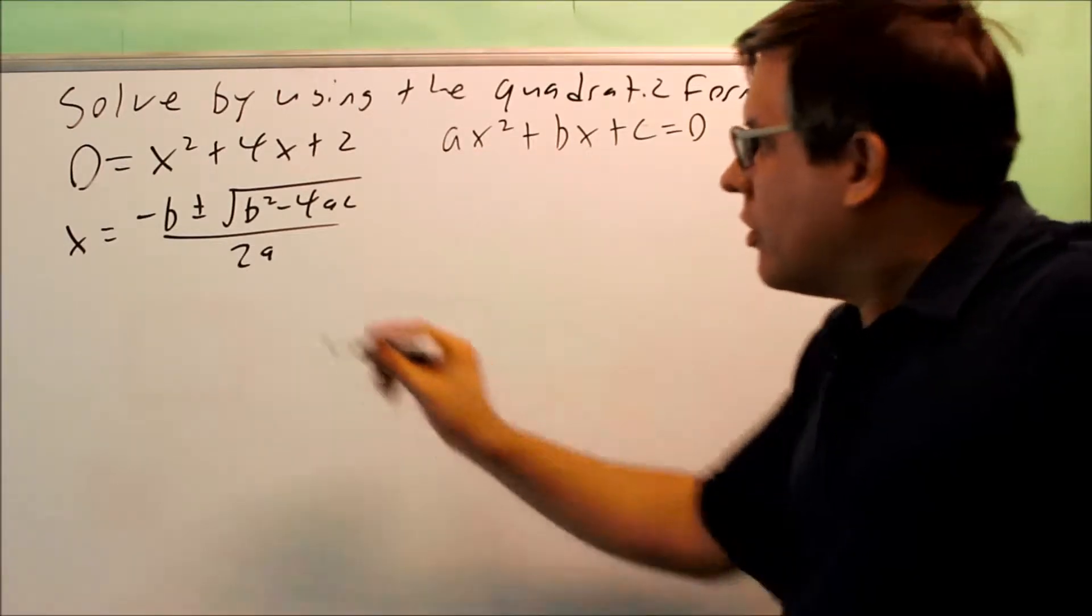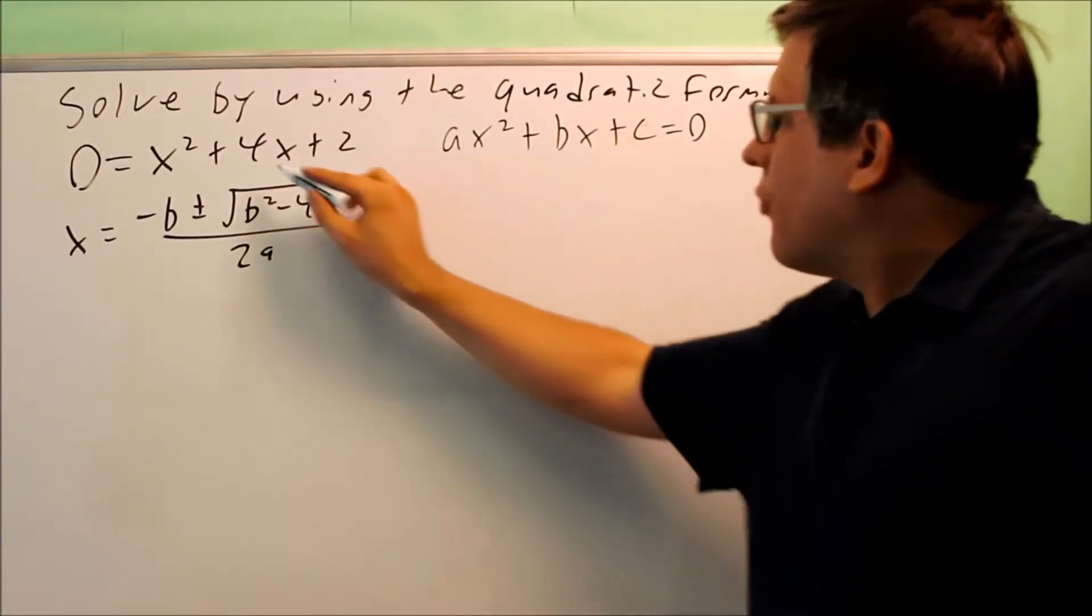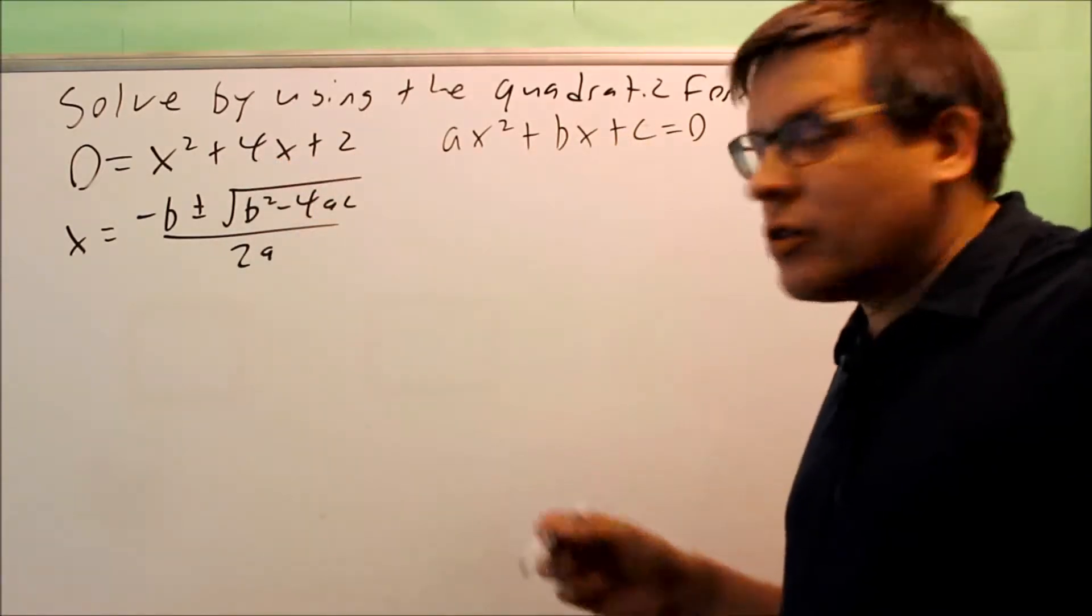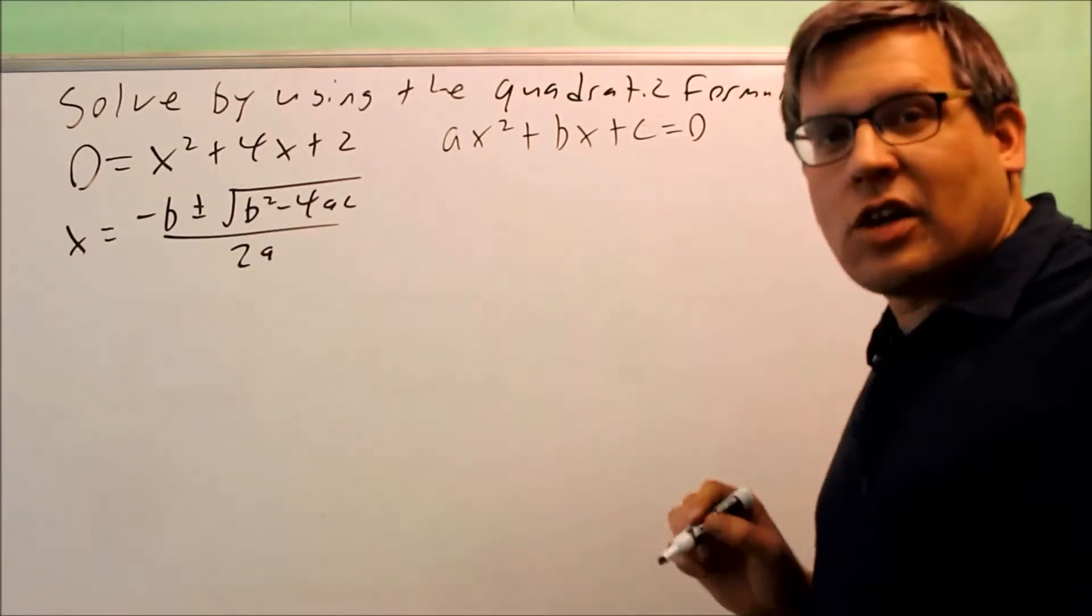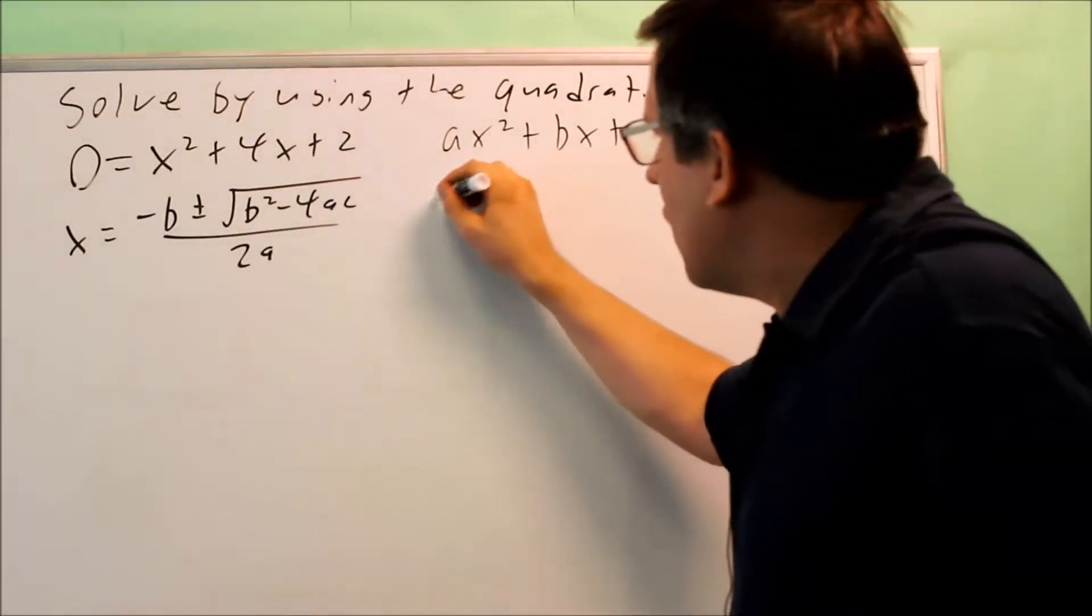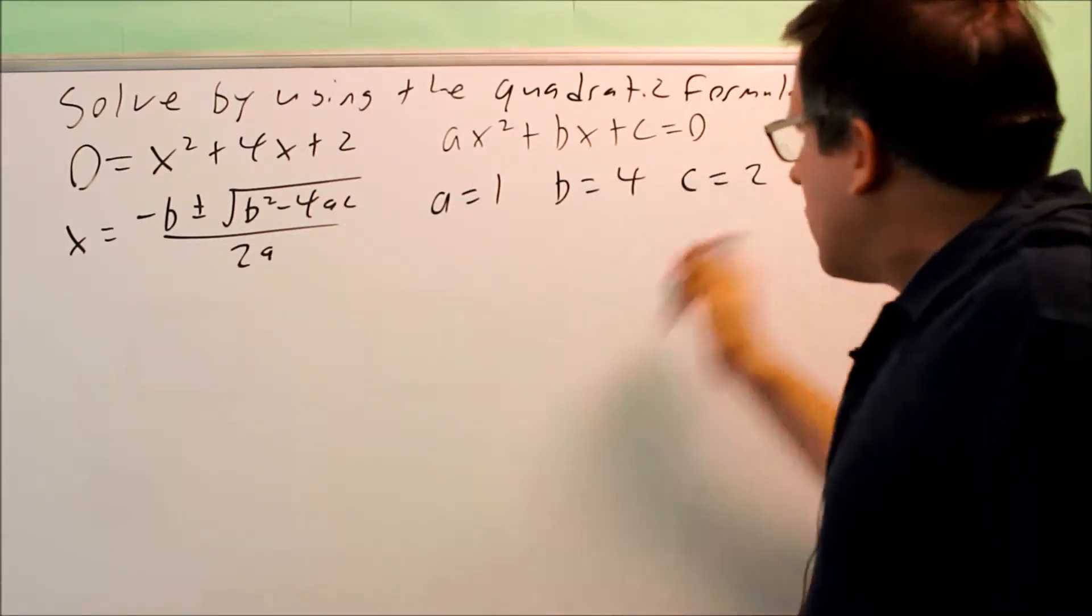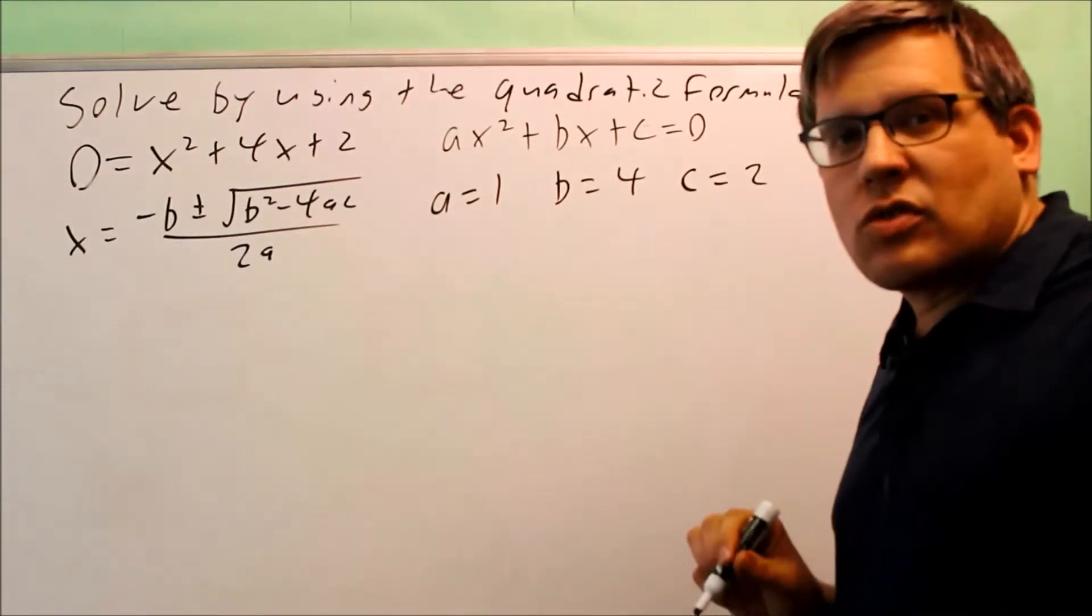The a is always in front of the squared variable, so a is 1 in this case. b is in front of the x, so b is 4 in this case, and then c is the one that's not attached to any variables in our problem. We have 2. So again, we say that a is 1, b is 4, and c is 2 based on the problem they want us to solve.